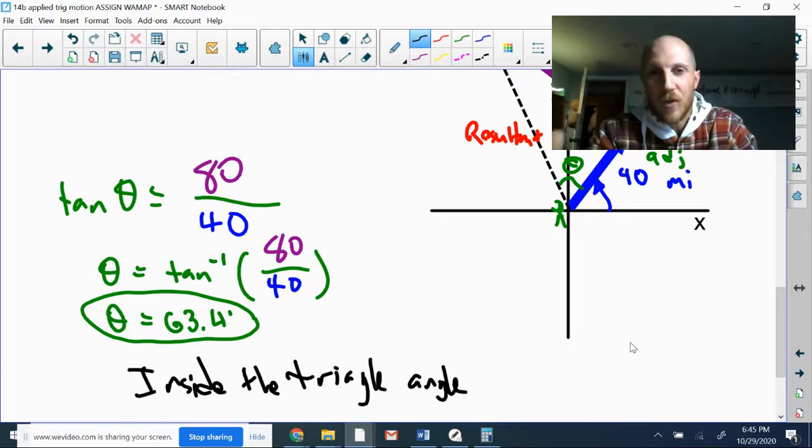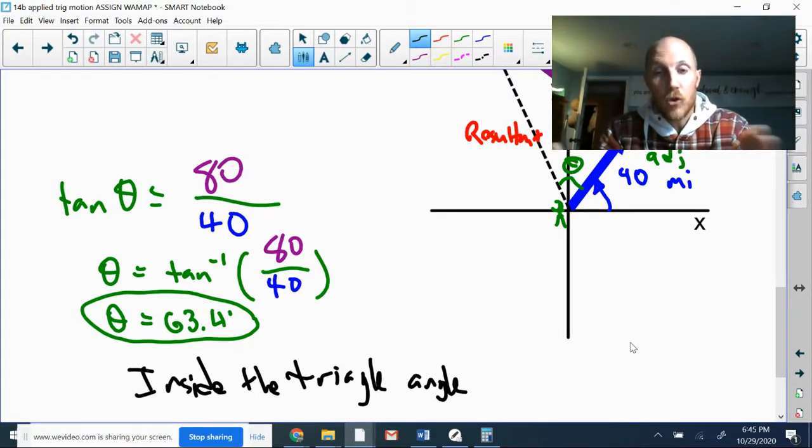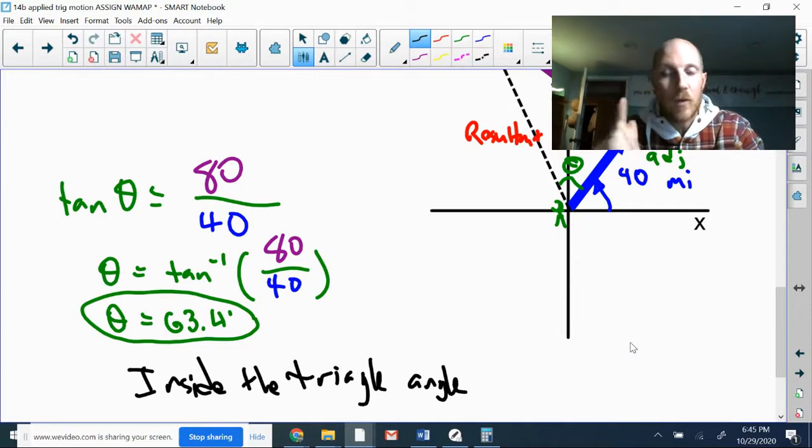So the blue vector I remember from earlier was at 65 degrees. So if I was to take the 65 degrees of rotation to get to the blue vector and then add the inside the triangle angle, that would give me the total direction angle from Port Angeles to the final location of the M/V Coho. So 65 plus 63.4 is going to give me 128.4 degrees as my direction angle.